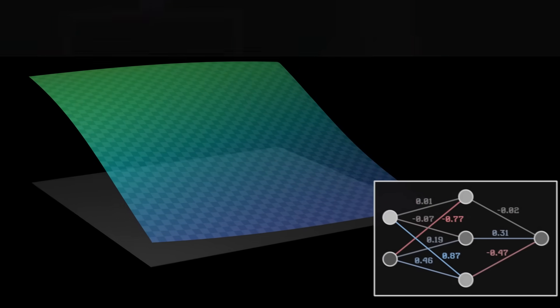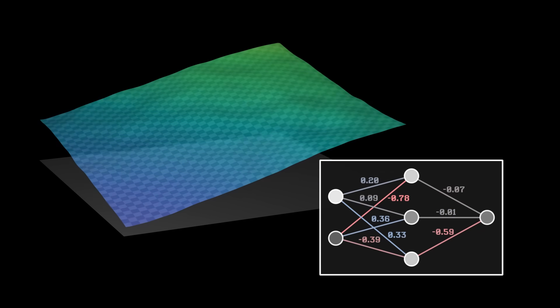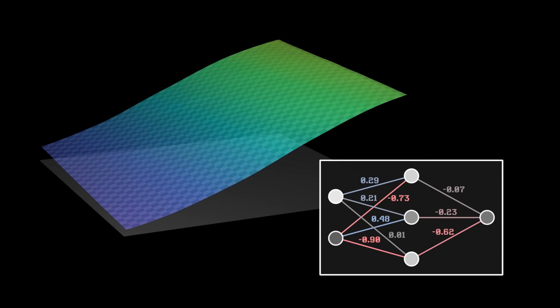In our case, the values of the field depend on the parameters of the network. By adjusting them, we obtain different values.